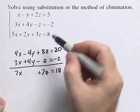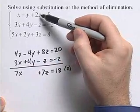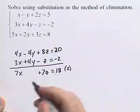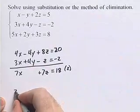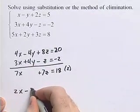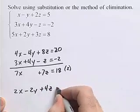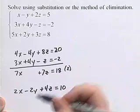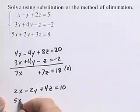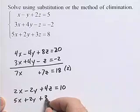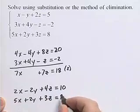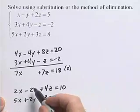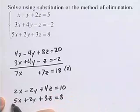Now we're going to eliminate the variable y from the third equation. We still want to use our first equation — we're going to multiply it by 2, giving us 2x minus 2y plus 4z equals 10. We rewrite our third equation: 5x plus 2y plus 3z equals 8. To eliminate the variable y, we add those two equations together.